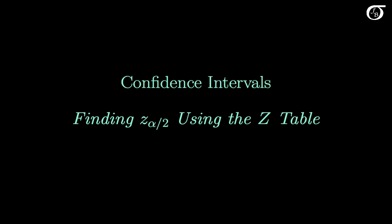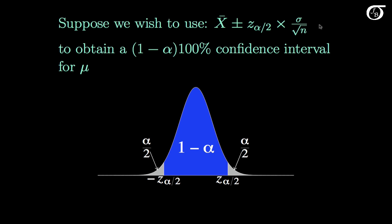Let's look at finding the appropriate z value using the standard normal table when constructing a confidence interval. Suppose we wish to use this confidence interval formula to obtain a 1-alpha times 100% confidence interval for mu. This is the appropriate formula when sampling from a normally distributed population where the population standard deviation sigma is known. The subject of this video is how to find the z sub alpha over 2 value using the standard normal table.